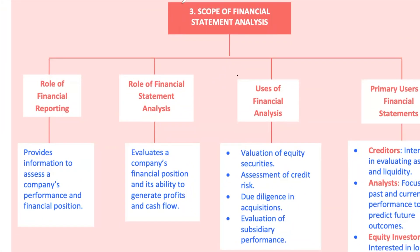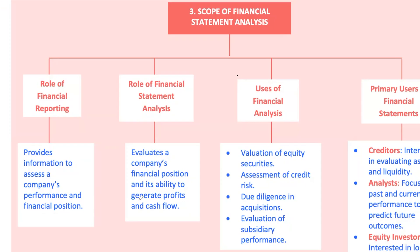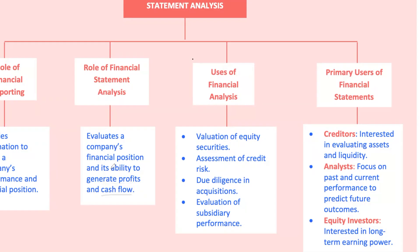The scope of financial statement analysis is pretty broad, but it boils down to evaluating a company's past, current, and prospective financial position. You're looking at how well the company generates profits and cash flows and how it might do so in the future. If you're an equity analyst, you're interested in long-term earning power. Creditors, on the other hand, are more concerned with a company's assets and liquidity — can they meet their short-term obligations? If their current ratio is below one, that might be a red flag, as they don't have enough assets to cover their liabilities.